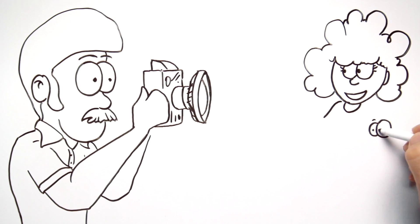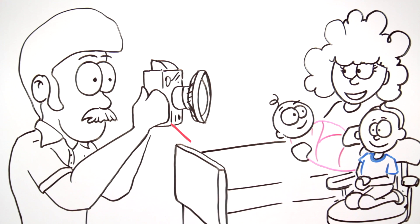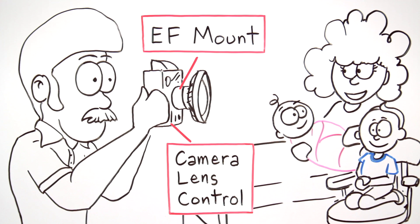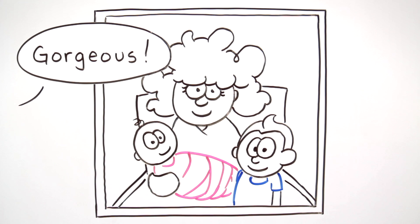In 1987, Canon revolutionized autofocus by allowing cameras to communicate with tiny lens motors. Focus became simple and automatic.